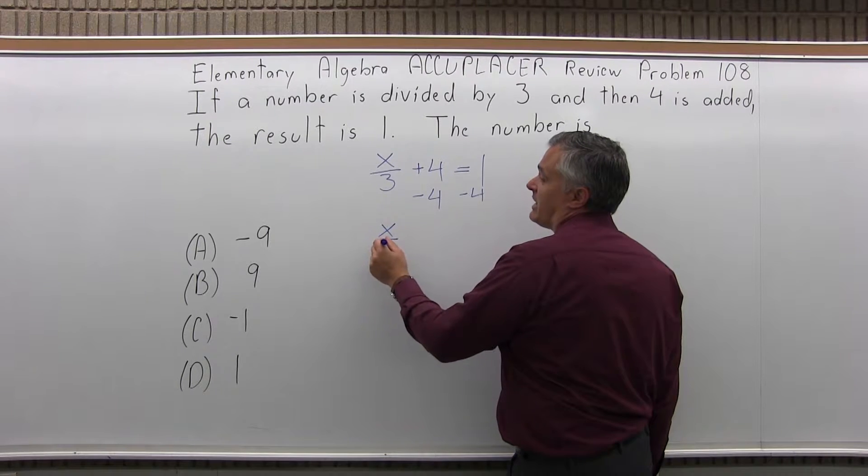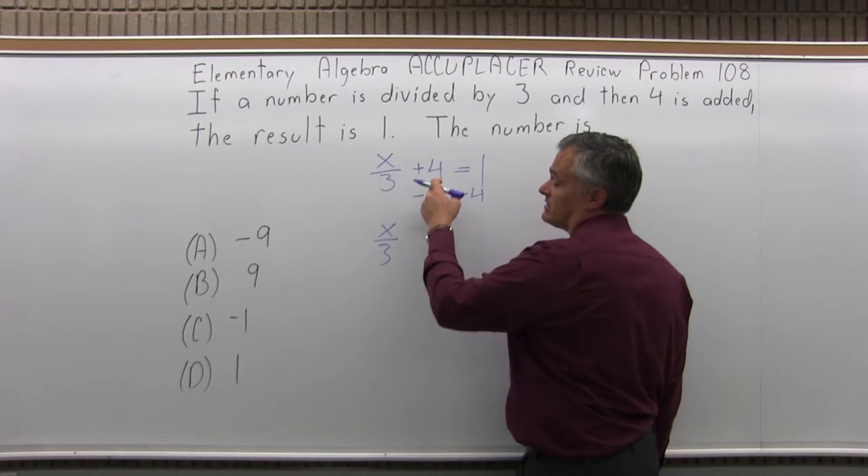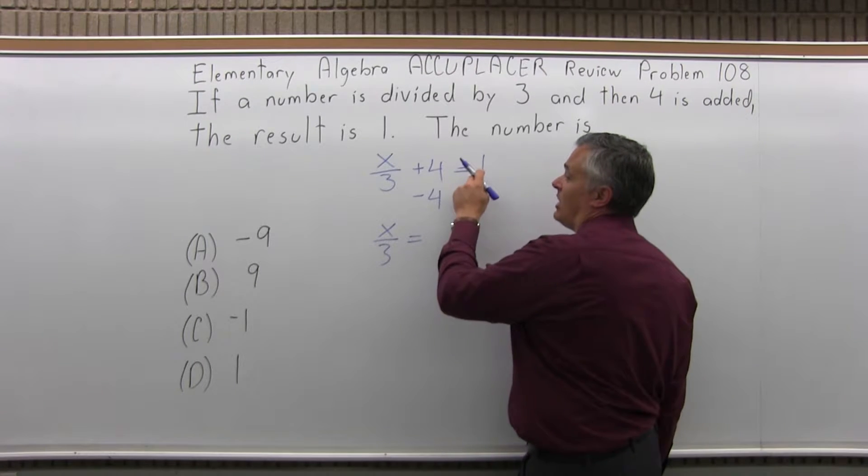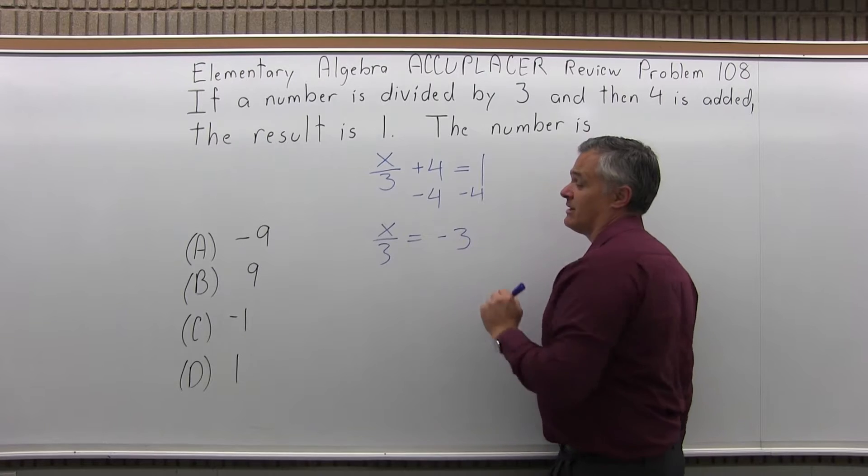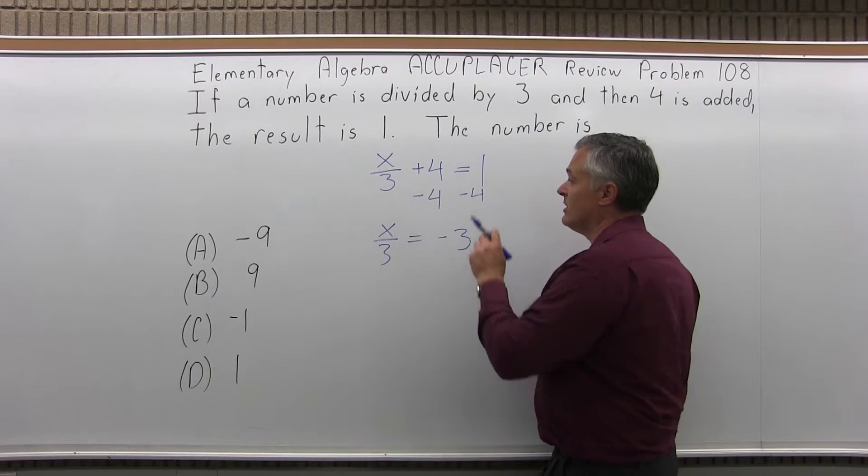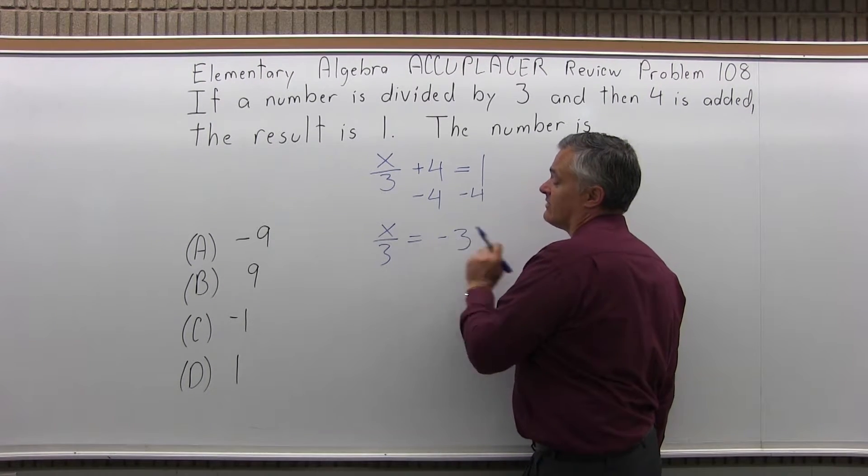So x over 3 plus 4 minus 4 is just x over 3, the 4s cancel on the left. On the right side, positive 1 minus 4 is negative 3, right? Don't lose the sign, that's very important. 1 and negative 4 is negative 3.